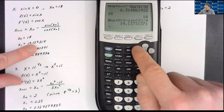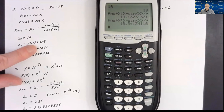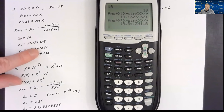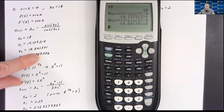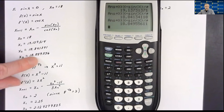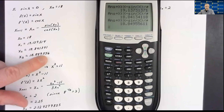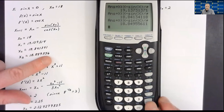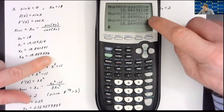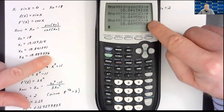Trying again: the second refined guess is 18.841341 to six decimal places — changed about 0.3 units. I'm expecting the next to change less than 0.03. The third refined guess is 18.849556 — it changed only 0.008 units. That's the third refined guess for this root of the sine function. Out of curiosity, the fourth refined guess to six decimal places is the exact same thing. You can verify: dividing this answer by π shows it's finding the x-intercept at 6π.